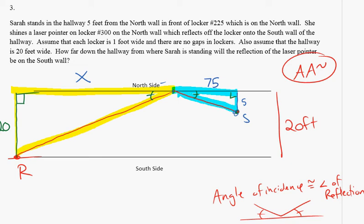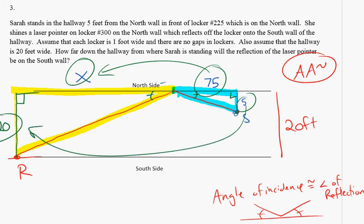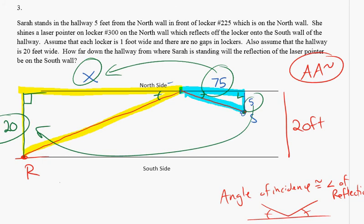These are similar triangles. If triangles are similar, the ratio between corresponding parts is equal. So we know the ratio of 75 to X has to be the same as 5 to 20. So 75 is to X as 5 is to 20.